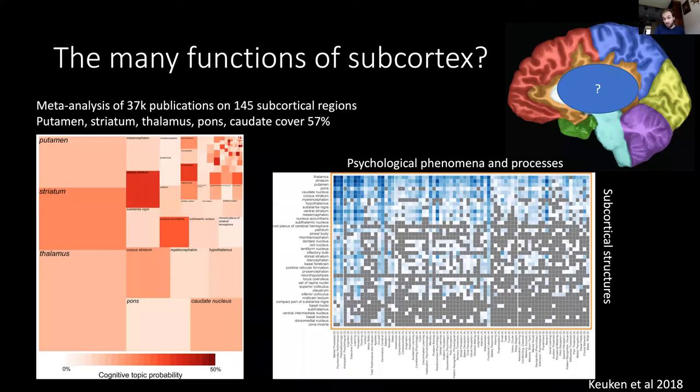This is one example where they try to find answers. This is a meta-analysis from Max Keuken and colleagues who queried PubMed by searching for 424 subcortical areas combined with MRI. They found a total of over 37,000 publications which could together cover 145 of these subcortical structures.